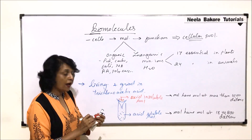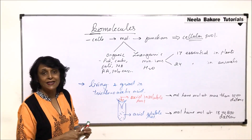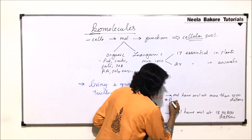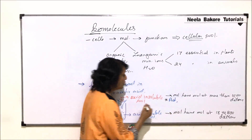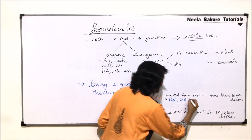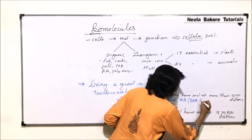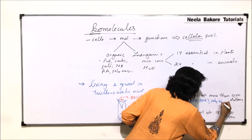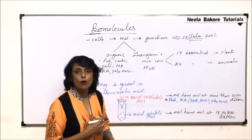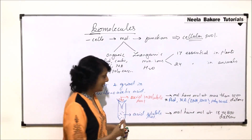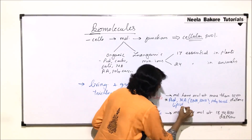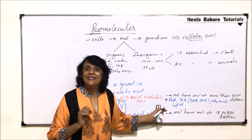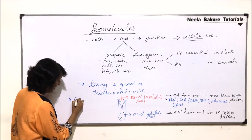There are four major organic substances detected in the acid-insoluble pool: proteins, which are macromolecules; nucleic acids, that is both DNA and RNA; polysaccharides such as cellulose, chitin, or glycogen; and lipids, that is fats. Lipids have a molecular weight of 800 daltons — this is an important point.